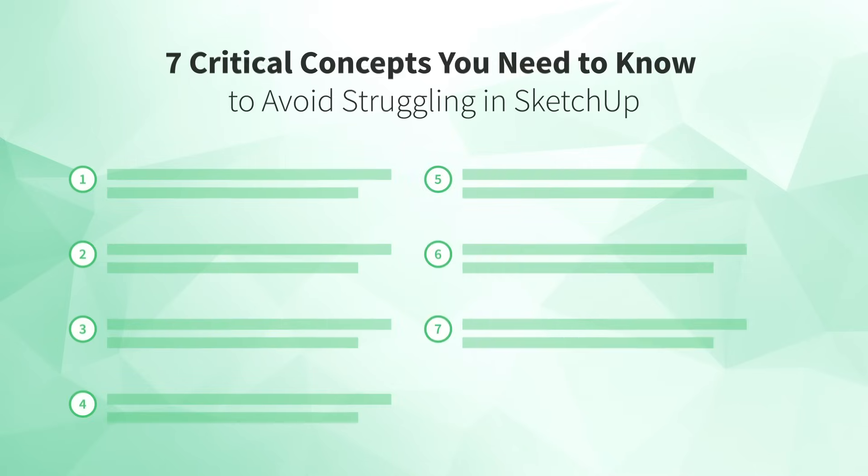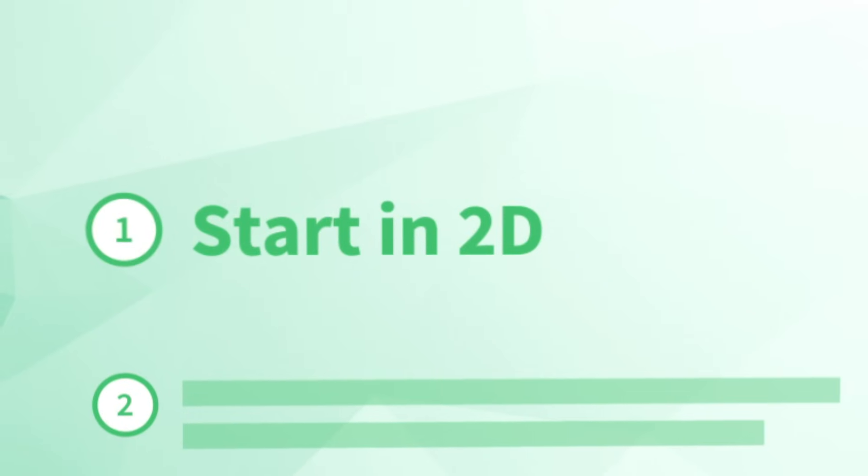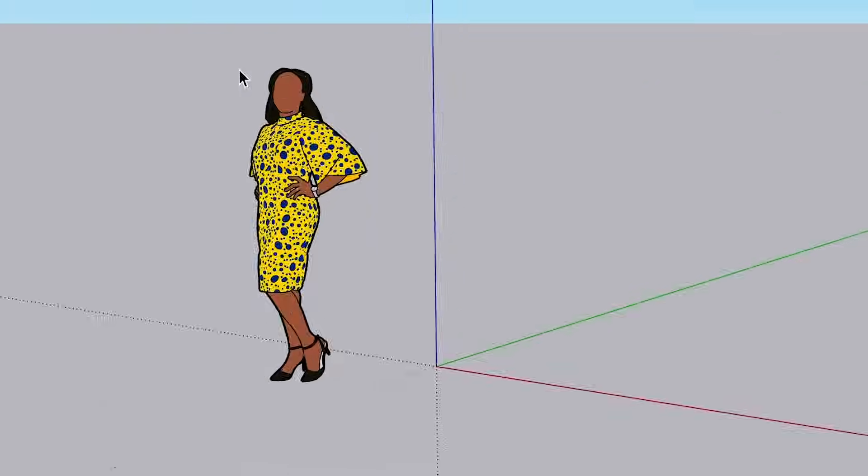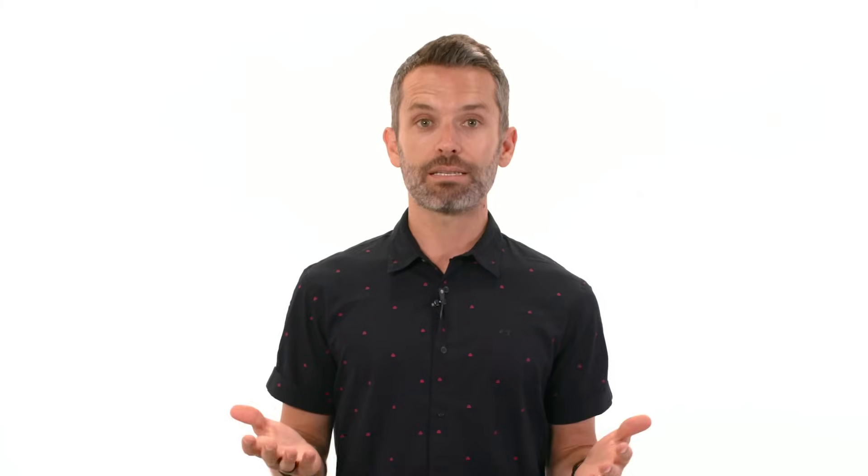Ready to jump in? Let's get started with number one, start in 2D. When you first open SketchUp, you're likely to choose a template that starts you off in an isometric or 3D view. In fact, most tutorials you'll find online start you off in this very same template. But here's the problem.